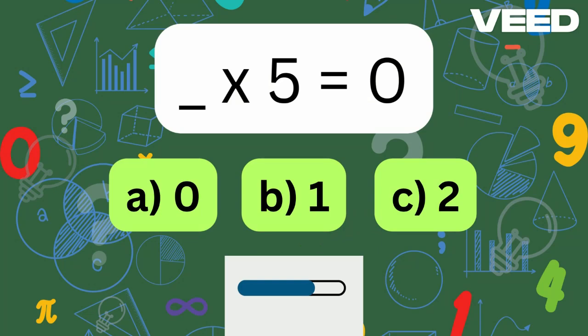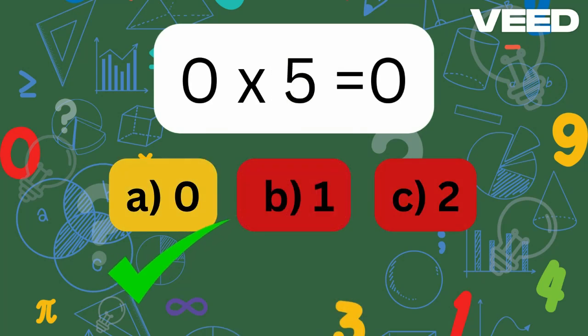What times 5 is equal to 0? You're right, 0 times 5 is 0.